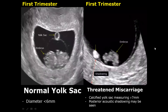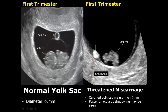The next feature is a calcified yolk sac that measures greater than 7 millimeters. A normal yolk sac is circular with an anechoic or hypoechoic center and a hyperechoic rim, and the diameter is usually less than 6 millimeters. A calcified yolk sac is hyperechoic and may have posterior shadowing.